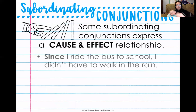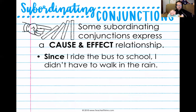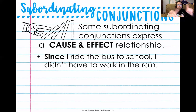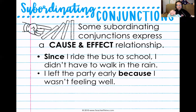Some also help to show a cause and effect relationship. Since I ride the bus to school, I didn't have to walk in the rain. That clause — I didn't have to walk in the rain — could function by itself. But since I ride the bus to school feels like there's something else needed. It's important to note that with subordinating conjunctions, the independent and dependent clauses' order can be reversed. Sometimes the dependent clause comes first, sometimes it comes second, and sometimes the independent clause comes first. We need to watch out for those subordinating conjunctions.